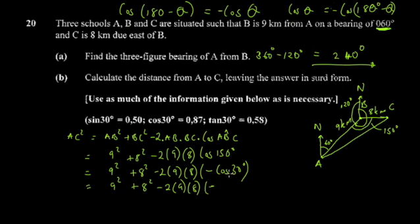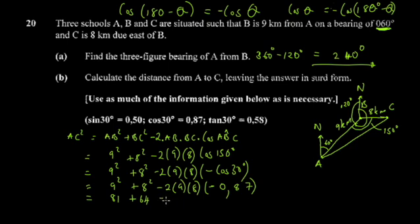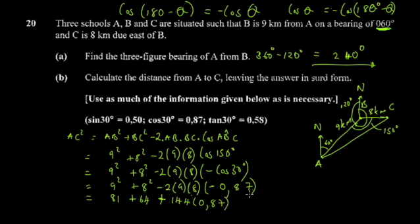So −cos(30°) ≈ −0.87. Now simplifying: 9² = 81, 8² = 64, and −2 × 9 × 8 = −144. With the double negative from −cos(30°), this becomes +144 × 0.87.